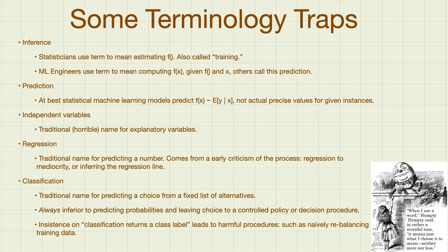There are some terminology traps — inessential difficulties we can get around. Many of the related fields — data science, statistics, ML, machine learning — deliberately use similar words for different meanings. For instance, in statistics, inference has always meant the fitting or learning of parameters of a model, whereas in machine learning engineering it now means the application of a model. Prediction is usually just the application of a model again, not full forecasting.